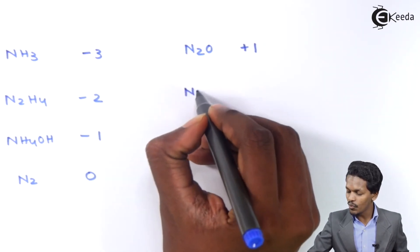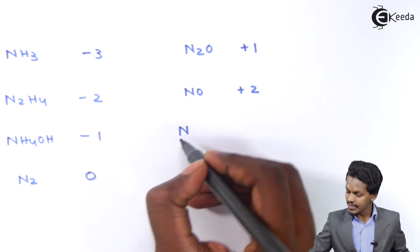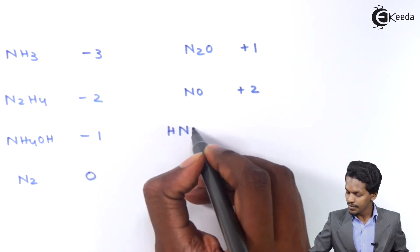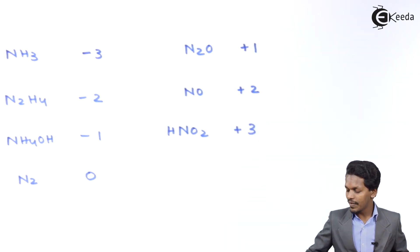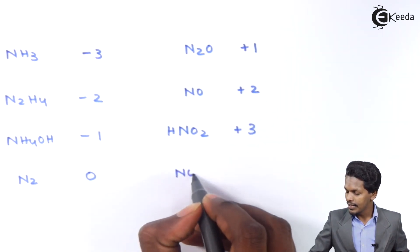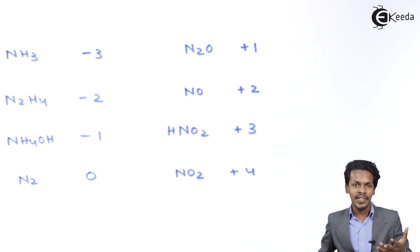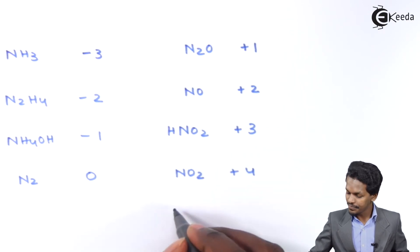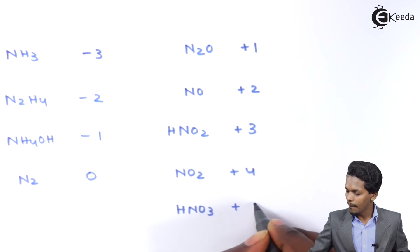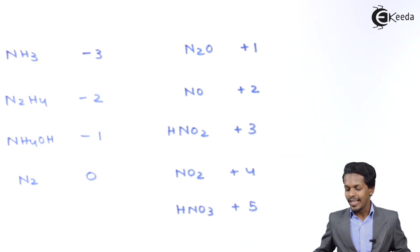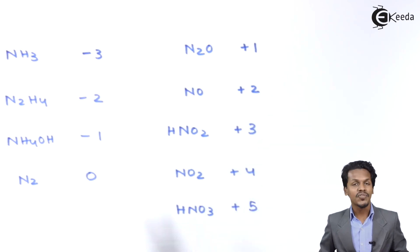In NO (nitric oxide), the oxidation state of nitrogen is plus 2. In HNO₂ (nitrous acid), it is plus 3. In NO₂, the oxidation state is plus 4. And finally, in HNO₃ (nitric acid), the oxidation state of nitrogen is plus 5.